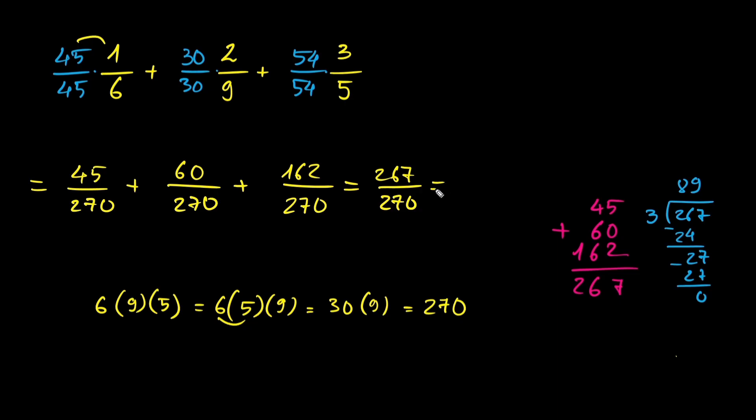267 divided by 3 is 89. 270 divided by 3 is 90. So we get the simplified fraction, 89 over 90. And that's how you can add three fractions together.